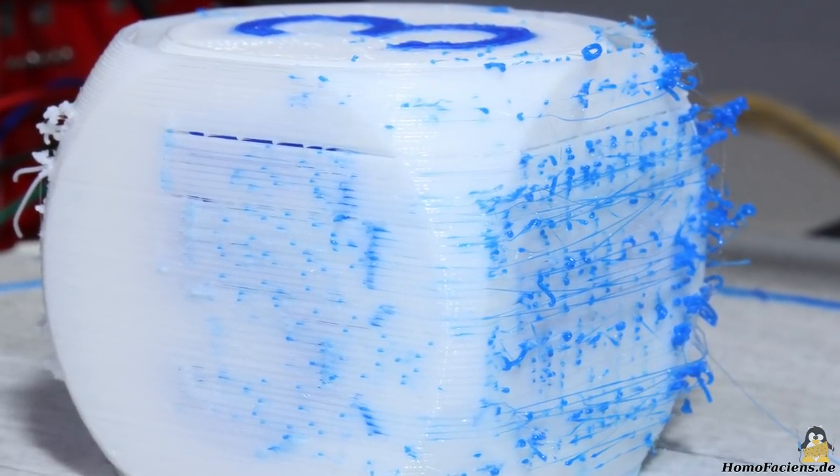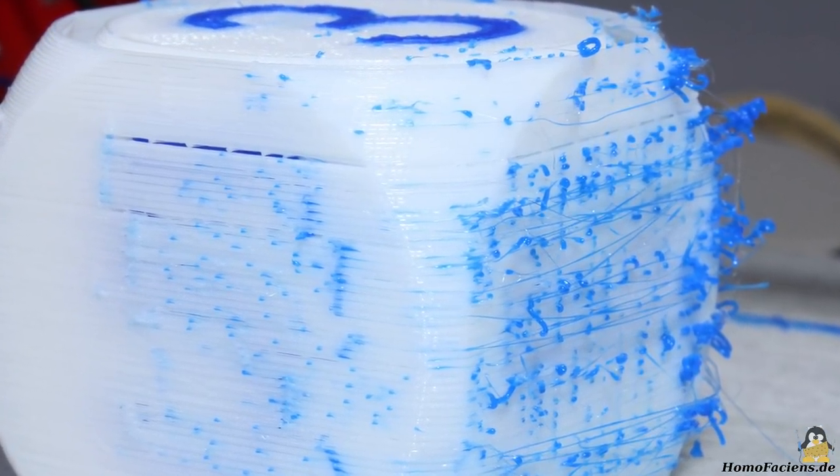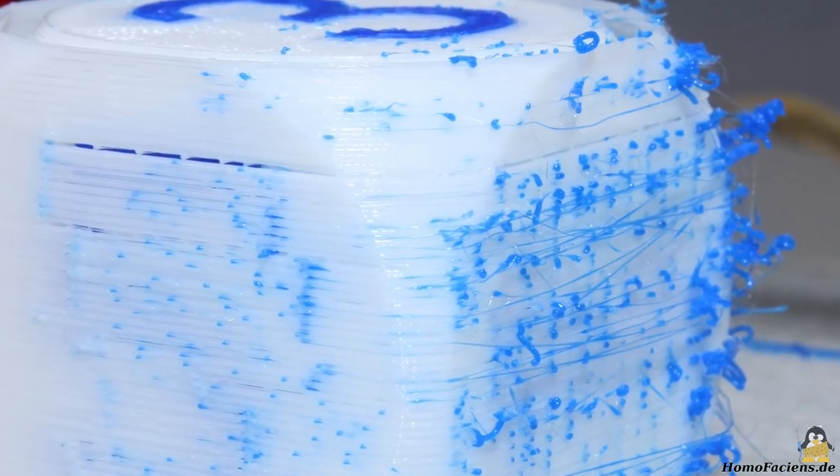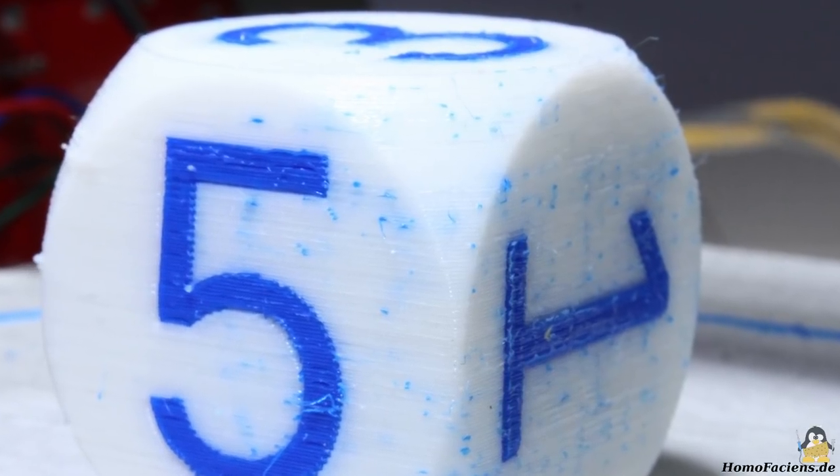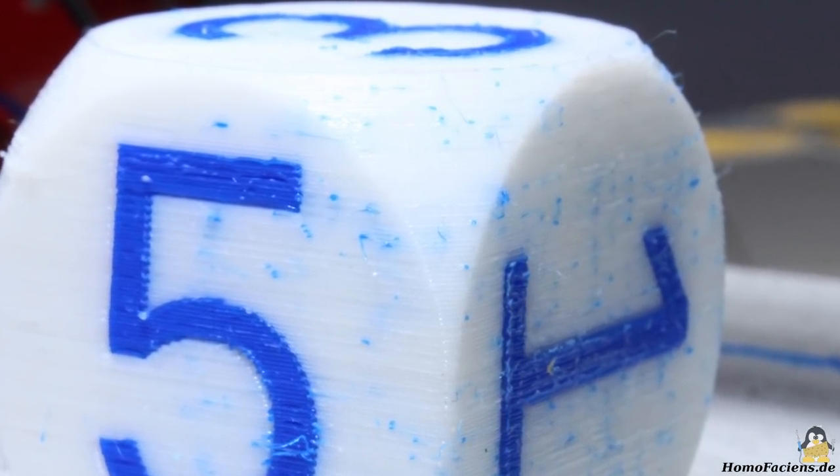As you can see on the finished print, this wall indeed caught lots of blue filament strings. However, not all of them. The white background is still covered with blue sprinkles.